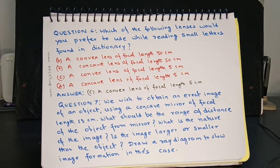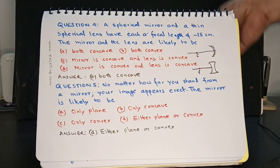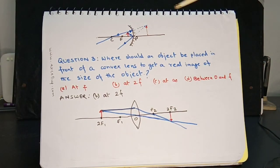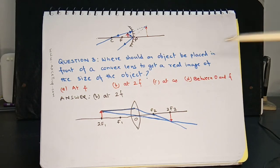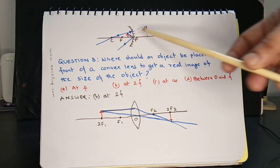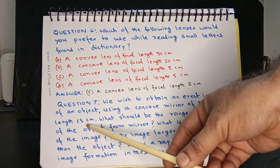Question 7: We wish to obtain an erect image of an object using a concave mirror of focal length 15 centimeters. What should be the range of distance of the object from the mirror? The object must be placed between F and P, as in Question 2. The image formed is virtual, erect, and larger than the object. Since the focal length is 15 cm, the object distance must be less than 15 centimeters.